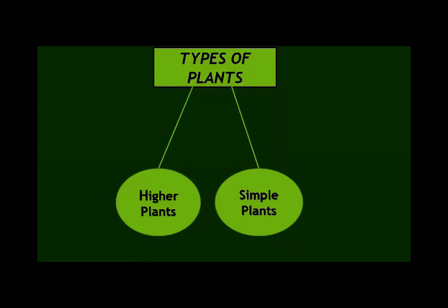In class 4 you learned about the higher plant and the simple plant. What are the simple plants? The simple plants are those that lack organs like root, stem, leaf, flower, and fruit. The second type is the higher plant. These have a complex body with complex organs including roots, stems, leaves, and seeds, and may have flowers and fruit, like the conifer and flowering plants.